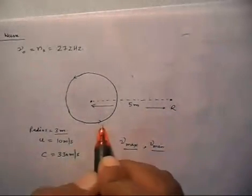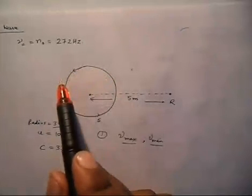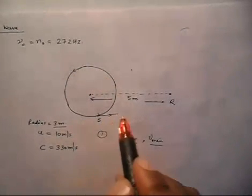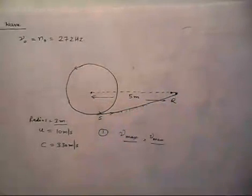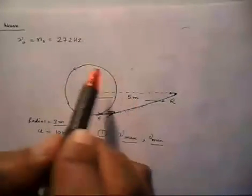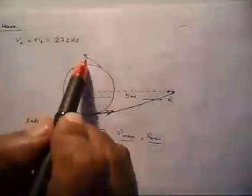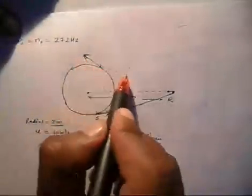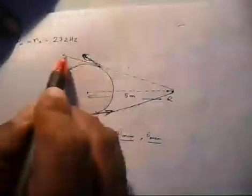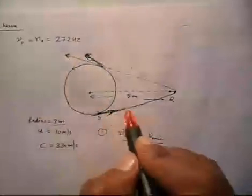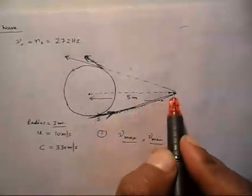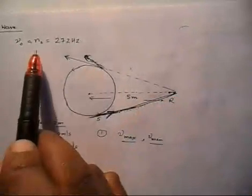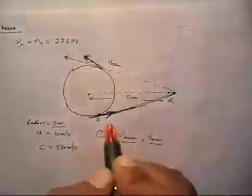Let us say this is the receiver and this is the source. We have a minimum and maximum frequency because when the source is moving, at one point in time its velocity is directed towards the observer — coming towards the observer. At another point in time the source is going away from the observer. When it is coming towards the observer, the receiver will see maximum frequency; when it is going away, it will have minimum frequency.